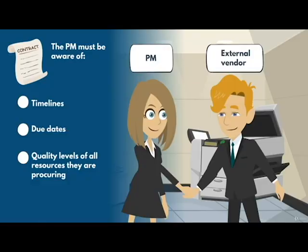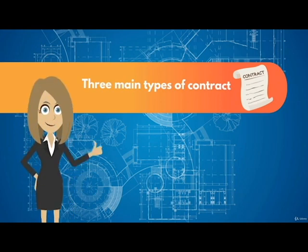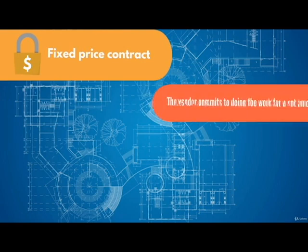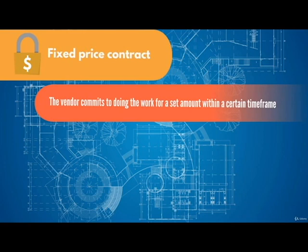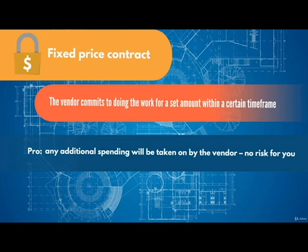There are three main types of contract that we will run through now. It is up to the project manager to find the best contract, because it's their main tool for keeping track of vendor work and behavior. The first one is called fixed price, and it's the simplest type of contract. The vendor commits to doing the work for a set amount within a certain timeframe. The pros of this is that any additional spending will be taken on by the vendor — no risk for you.